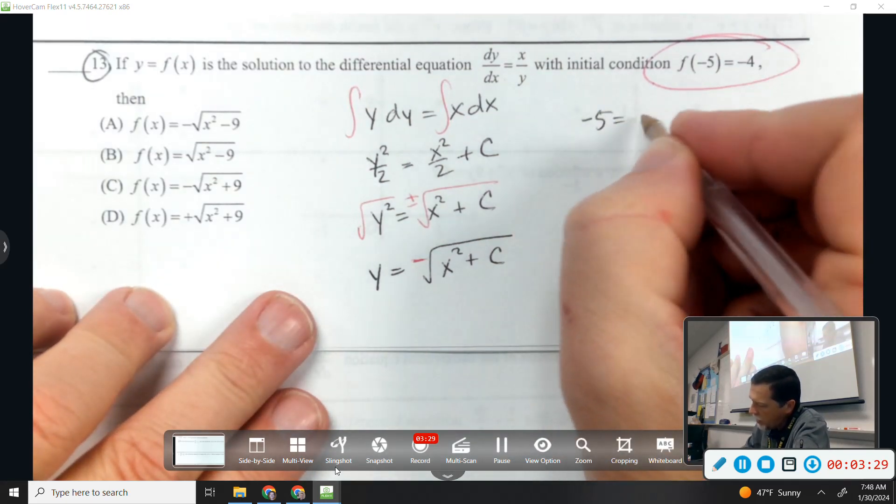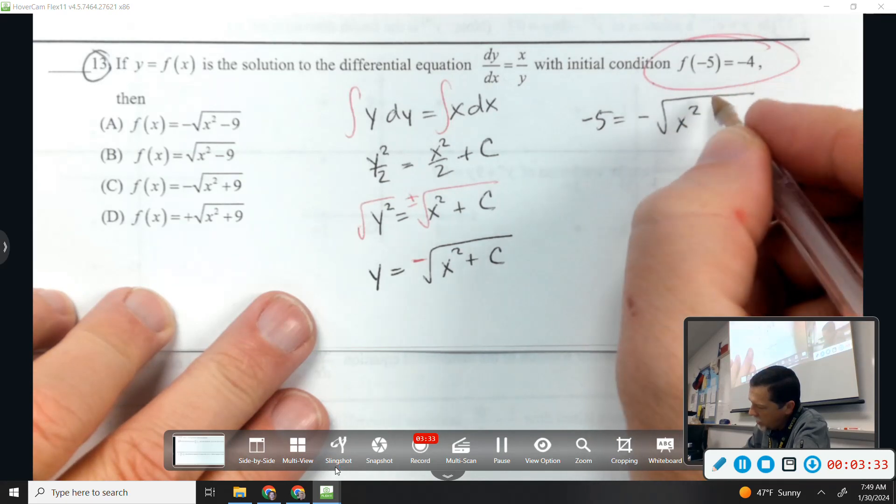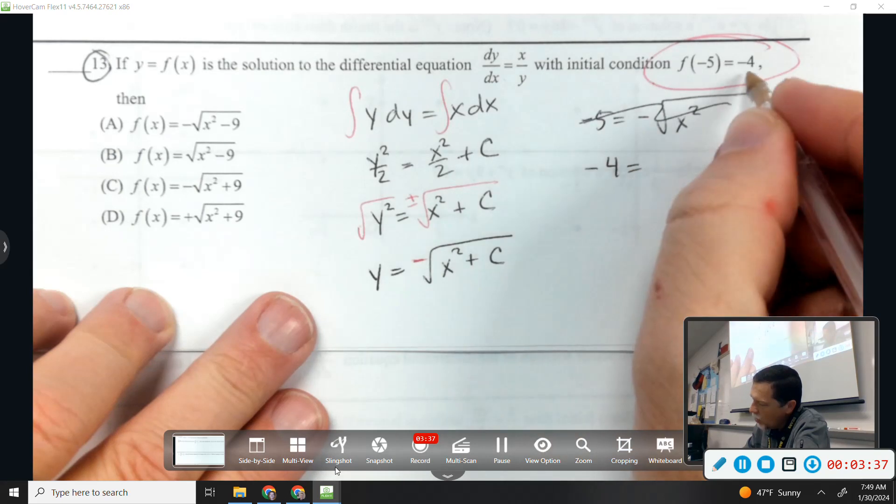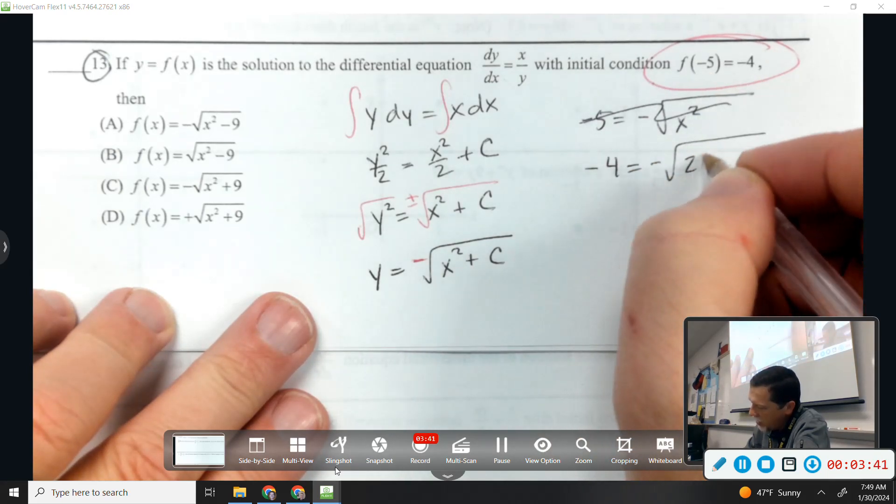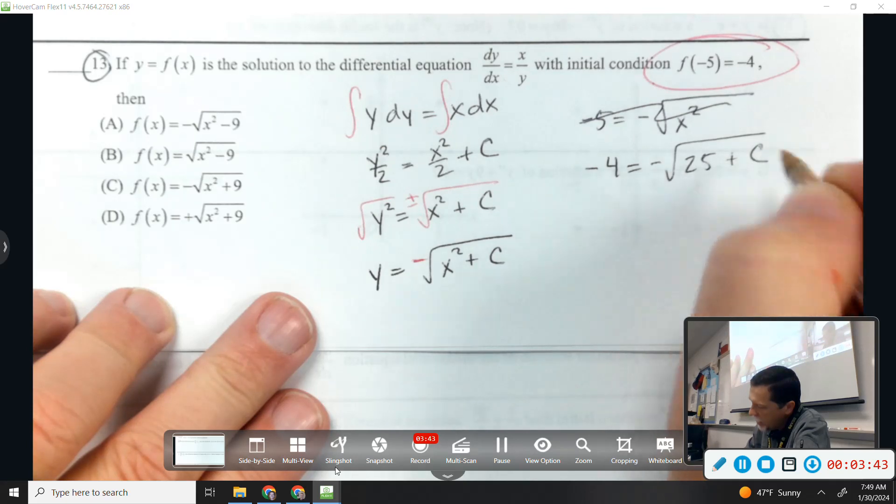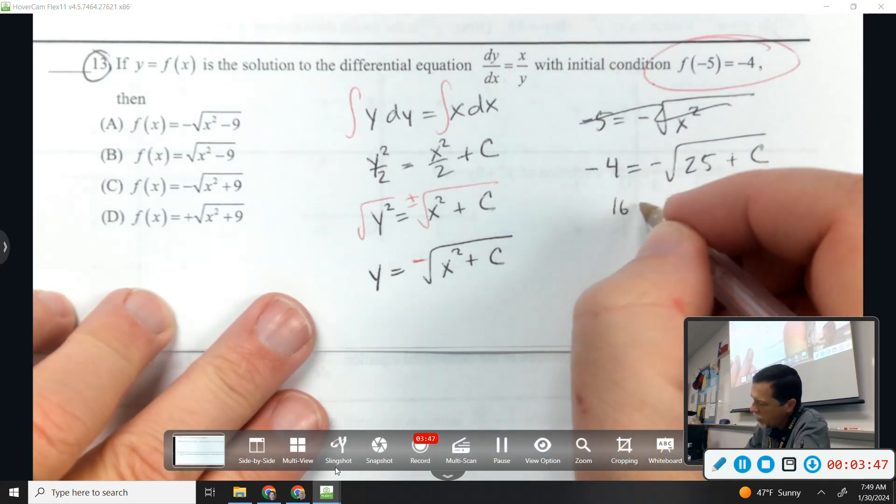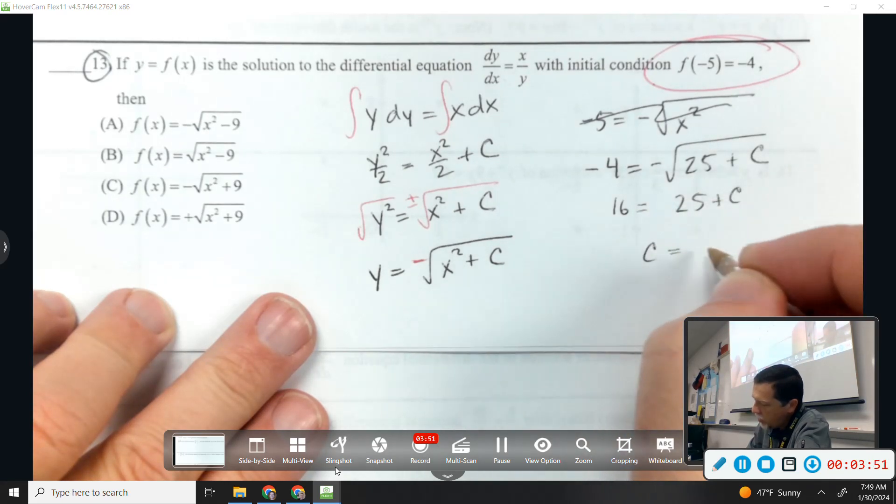So negative 5 equals negative square root. X, whoops, x is, whoops, did that backwards. Y is negative 4, x is negative 5. So let's see, we could square both sides. And c would have to be negative 9.